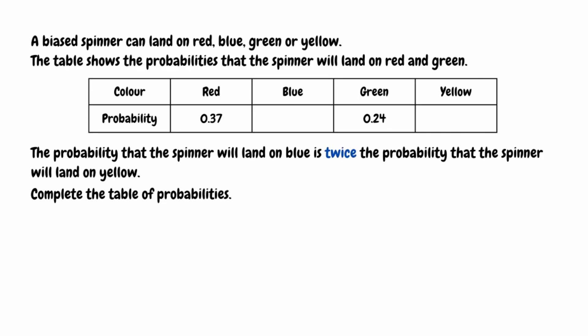For this next question, we have that a biased spinner can land on red, blue, green or yellow. The table shows the probabilities that the spinner will land on red and green. The probability that the spinner will land on blue is twice the probability that the spinner will land on yellow. We need to complete the table of probabilities. The probabilities are given as decimals, so we'll figure out the remaining probabilities as decimals too. We can write blue to yellow as a ratio — since blue is twice as likely as yellow, that's 2 to 1.